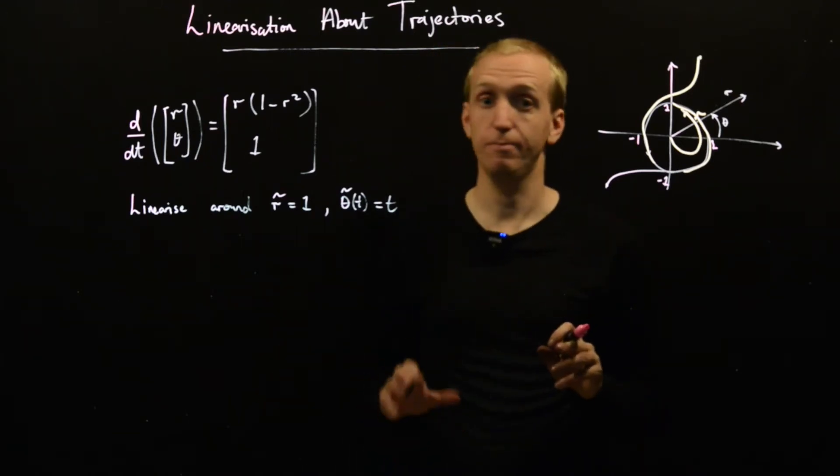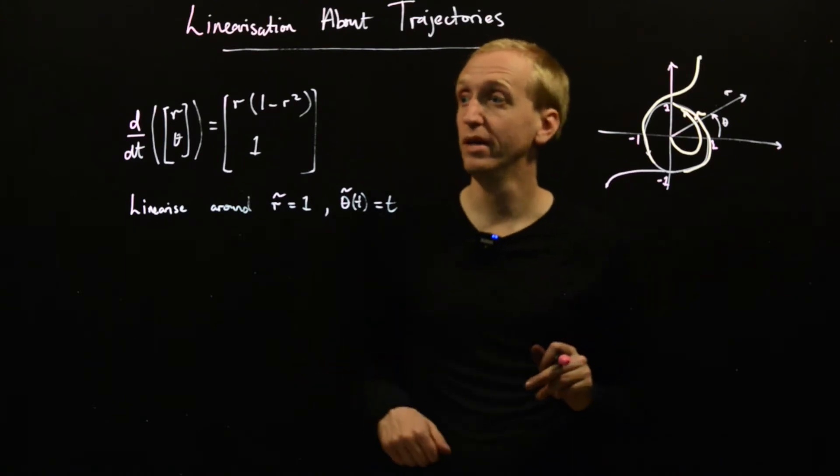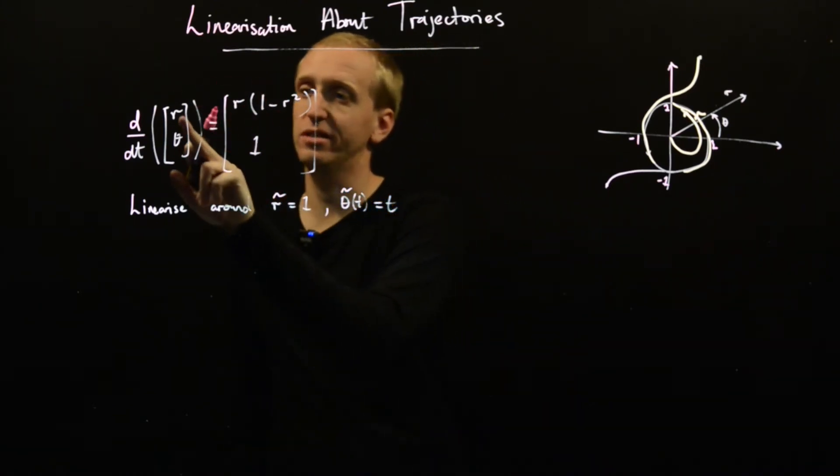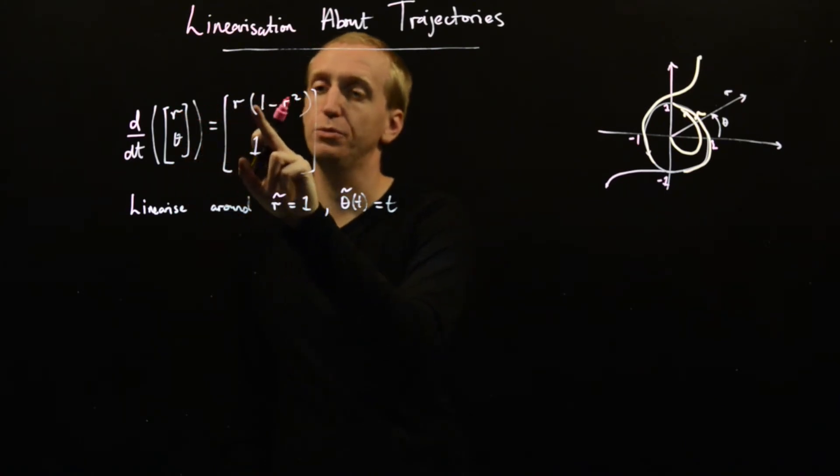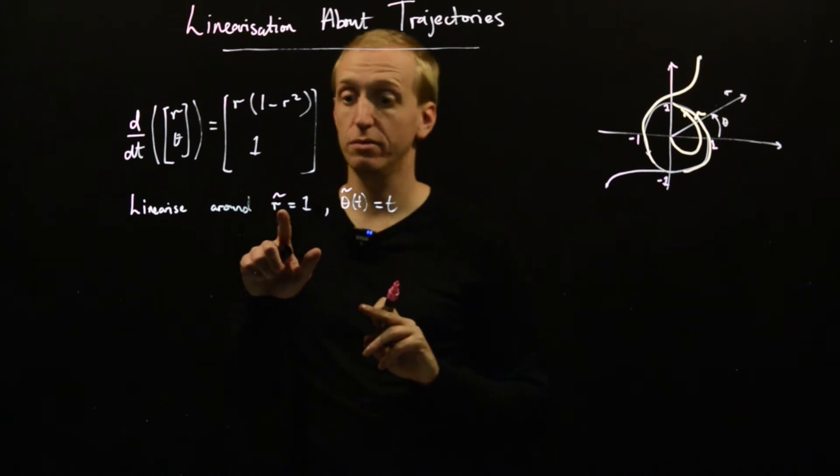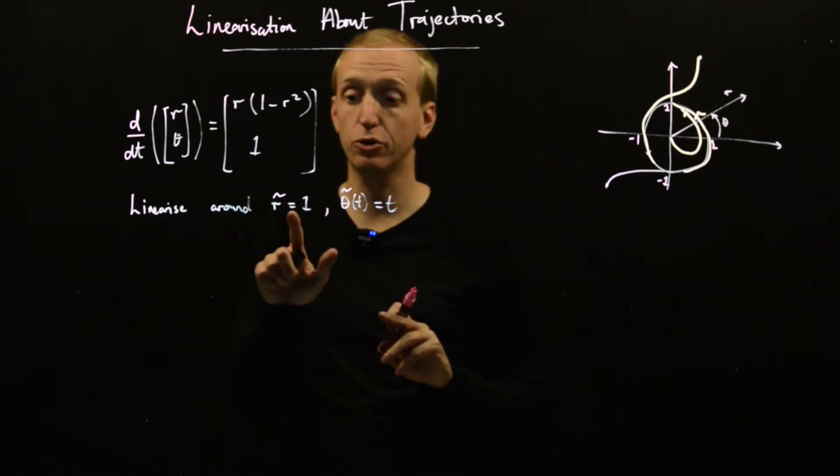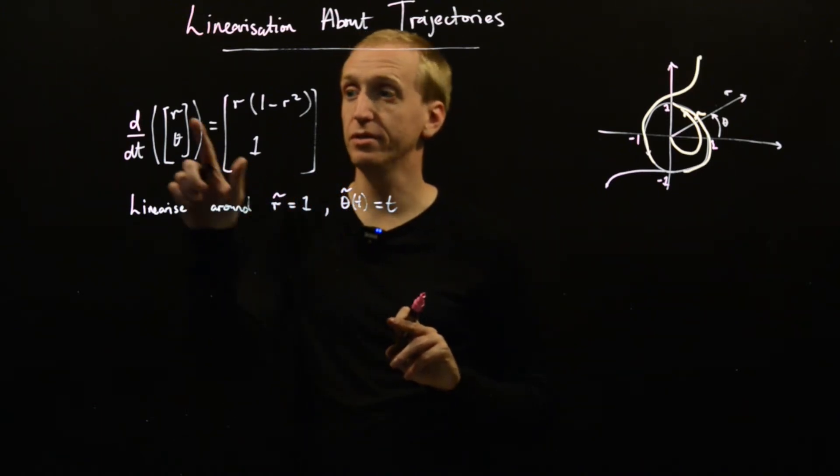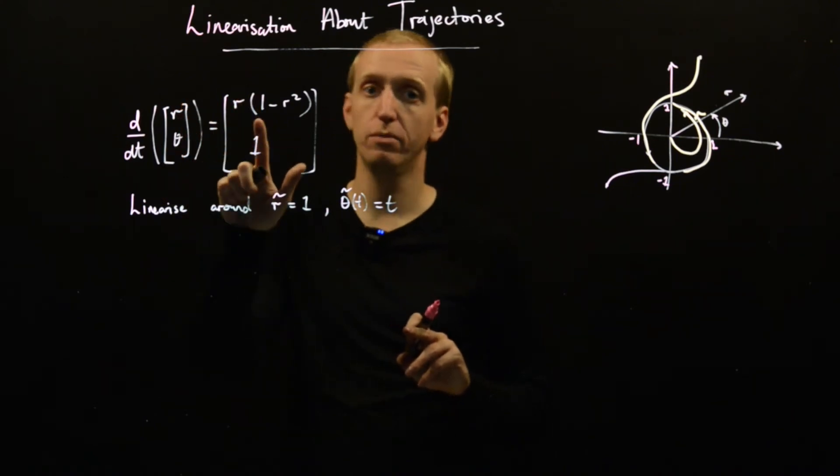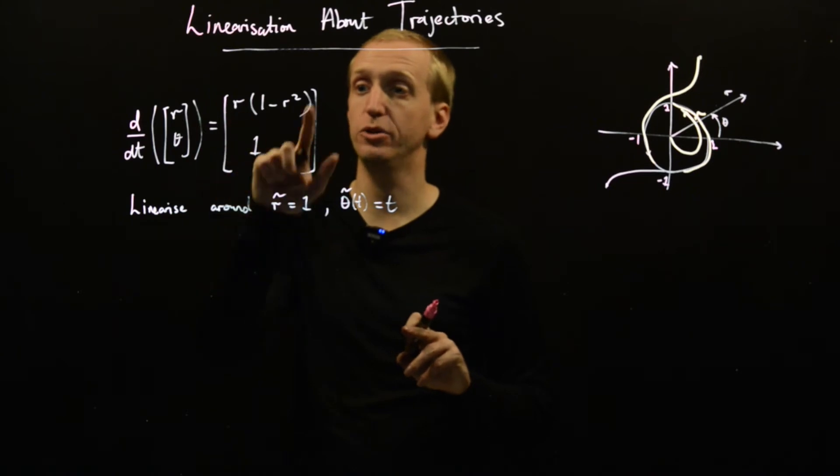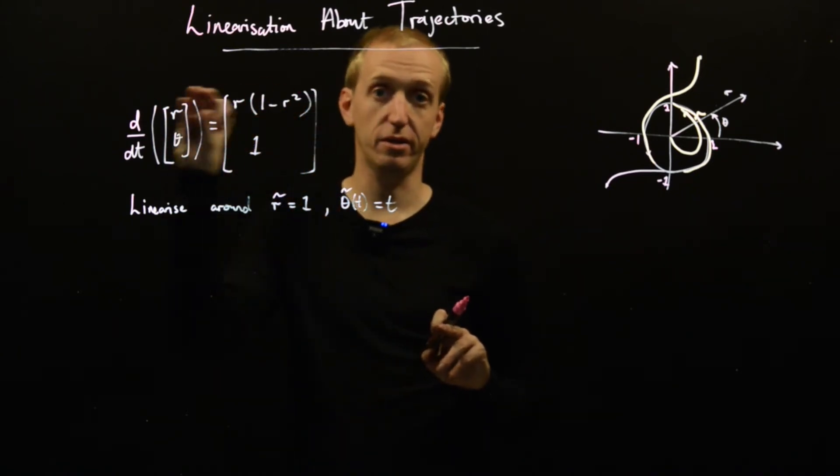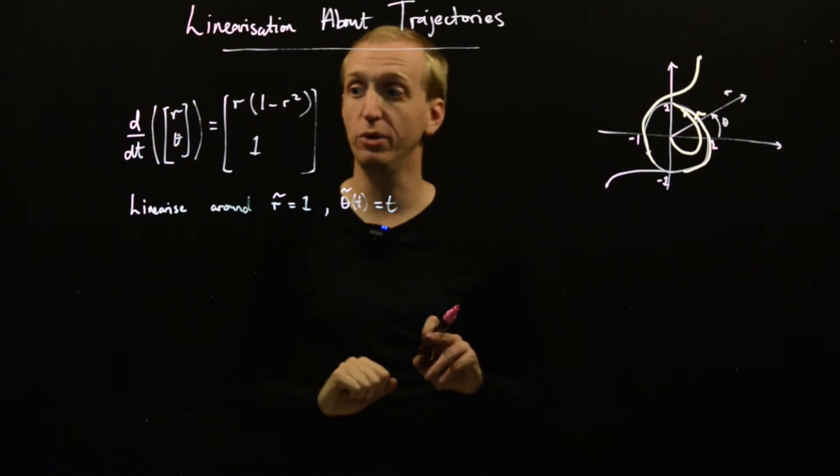In fact, we can very quickly see that yes, it is a solution. Let's deal with the first equation, which says that r dot equals r times (1 minus r squared). And r dot of our equilibrium trajectory, well r is a constant, so we have 0 equals 1 times (1 minus 1 squared), which equals 0. So the first equation is solved by our equilibrium trajectory.